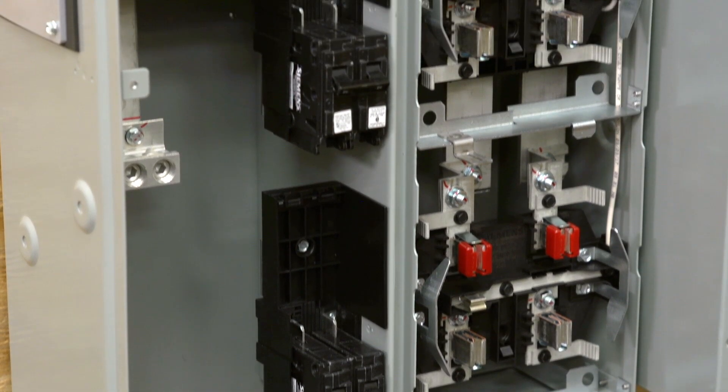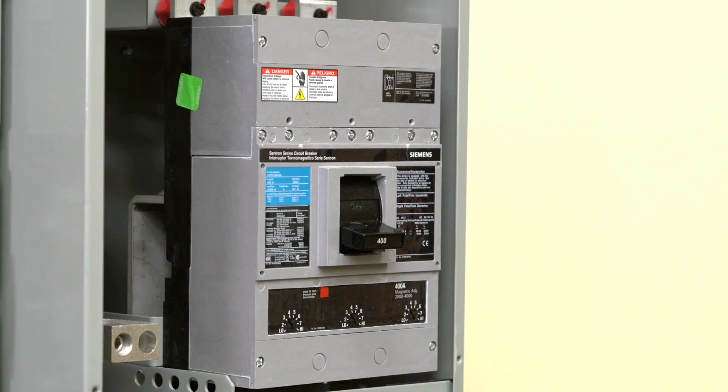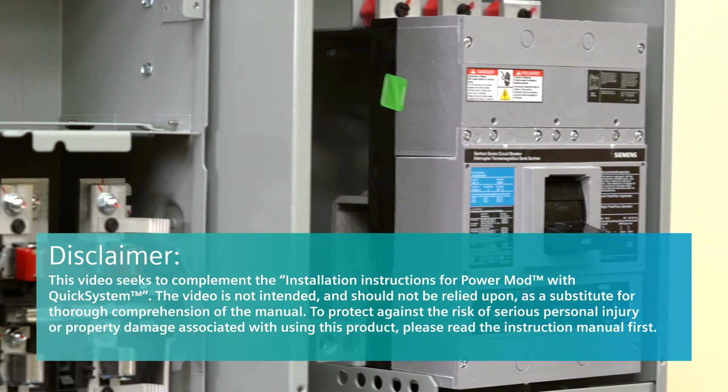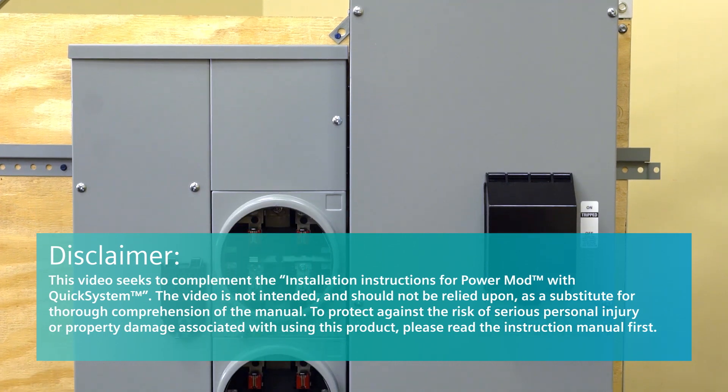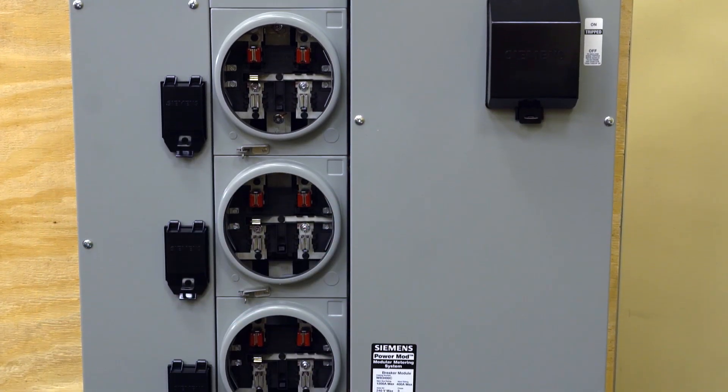Siemens PowerMod with QuickSystem is a robust, flexible, and feature-rich line of modular metering. This video will help review and explain some of the installation instructions that come included with the product. If instructions are followed correctly, Siemens PowerMod can be installed up to 43% faster than our competitors' products.